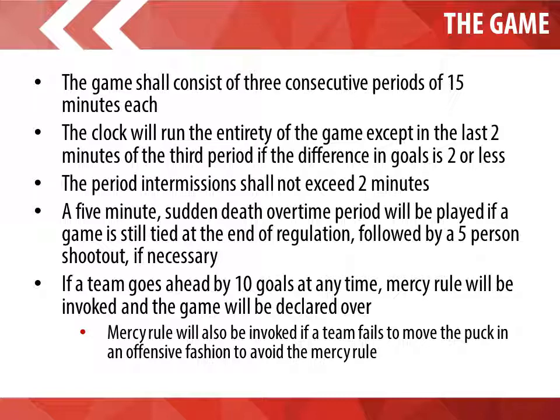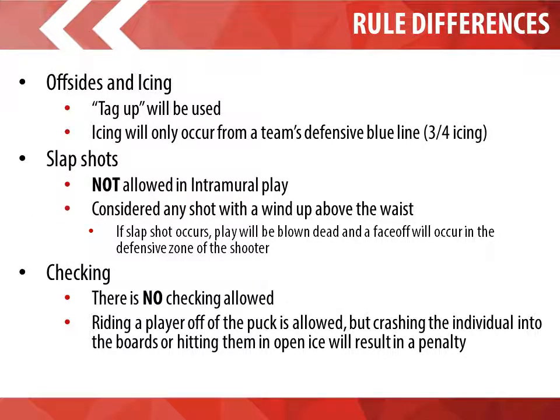The game shall consist of three consecutive periods of 15 minutes each. The clock will run the entirety of the game except in the last two minutes of the third period if the goal difference is two or less. The period intermission shall not exceed two minutes. A five-minute sudden death overtime will be played if the game is still tied at the end of regulation, followed by a five-person shootout if necessary. If a team goes ahead by ten goals at any time, the Mercy Rule will be invoked and the game declared over. Offsides and icing use the tag-up rule, and icing will only occur from a team's defensive blue line — three-quarters icing.